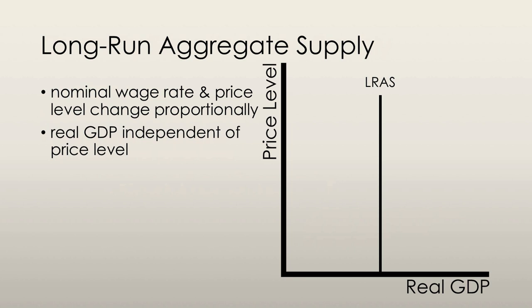The long-run aggregate supply is the relationship between the quantity of real GDP supplied and the price level when the money wage rate changes at the same pace as the price level to maintain full employment. The quantity of real GDP supplied equals potential GDP, which equals the level of full employment. This quantity is the same regardless of the price level, which is why the curve is a vertical line. Long-run aggregate supply is vertical because as the general price level increases, the prices of factors of production will increase as well in the long run, so real GDP does not really change with the increase in the price level.